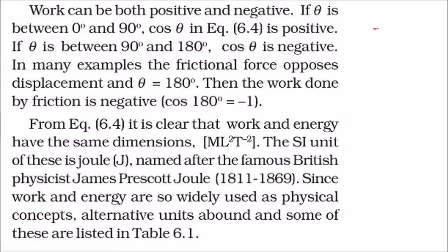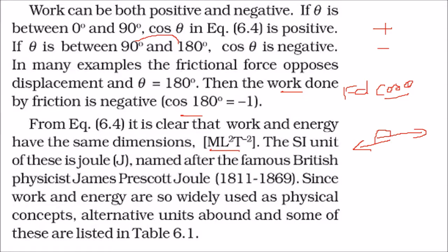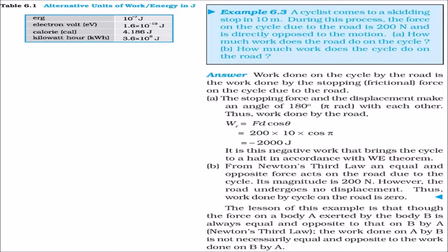Work can be positive or negative, depending on the angle θ in W = Fd cosθ. If θ is between 90° and 180°, cosθ is negative. For example, friction always opposes displacement, so the angle is 180°, making work done by friction negative (cos180° = −1). The dimension of work and energy is ML²T⁻², and the SI unit is the Joule, named after British physicist James Prescott Joule. Other units include erg, electron volt, calorie, and kilowatt-hour.